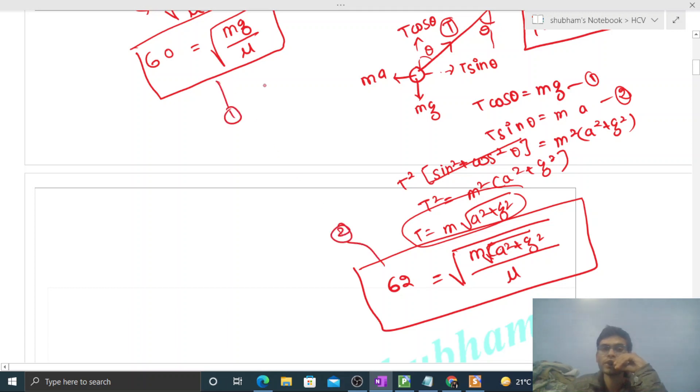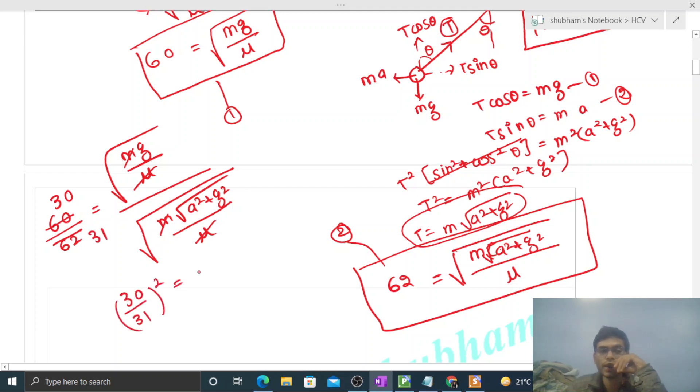And this is equation 1. Now we will divide equation 1 and equation 2. So 60 divided by 62, that is equal to under root of mg divided by mu divided by under root of m under root of a square plus g square divided by mu. So mu cancels, mass also cancels. Let's do one thing, let's take square.